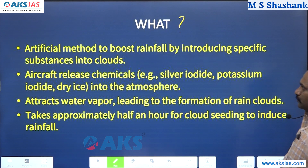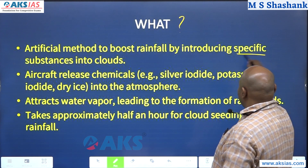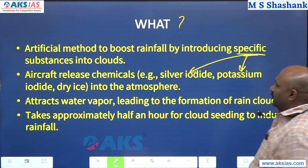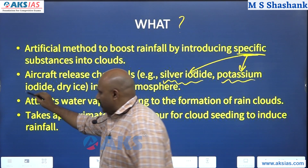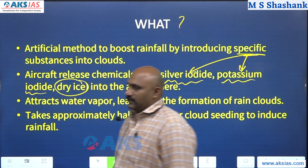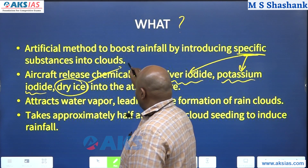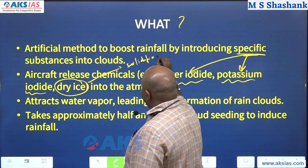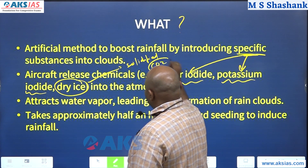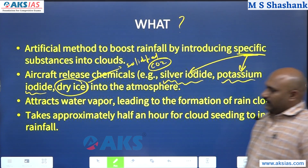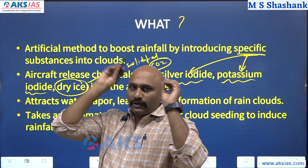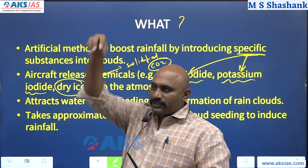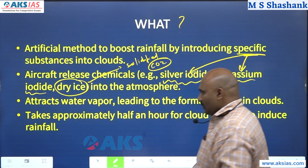Cloud seeding is an artificial method to boost rainfall by introducing specific substances into clouds. These specific substances are silver iodide and potassium iodide, and majorly dry ice — dry ice is solidified carbon dioxide. For this technique you require aircraft because you need to go up to the clouds and start dispersing these substances.